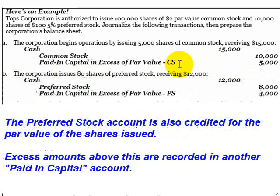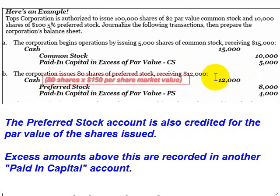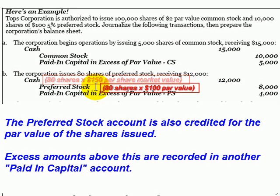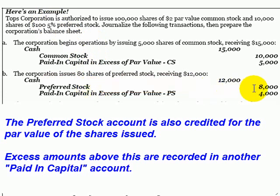When the corporation issues the preferred stock, the same rules apply. We need to debit cash for the cash received from the stockholders. The credit to preferred stock is for par value — our preferred has a $100 par value. We've issued 80 shares, so the credit to preferred stock is $8,000. That means we have a credit difference of $4,000 to account for, and that goes into the paid-in capital in excess of par value preferred stock account.